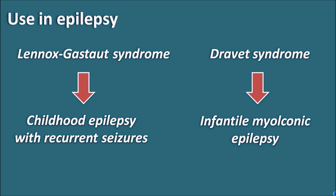Dravet syndrome is observed in infants less than one year old and symptoms can be observed throughout the life period. So cannabidiol can be given to infants as well as adults suffering from these two types of syndromes. In summary, cannabidiol is a useful drug in the treatment of epilepsy and can also have other actions like analgesic, anxiolytic, and muscle relaxant activities, but it is mainly indicated for epilepsy where safety is highly established.